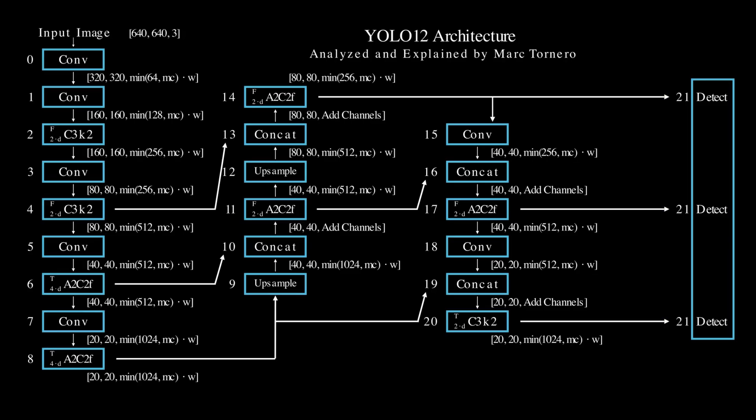The architecture you see here is shared across all YOLO12 model sizes, whether you're using the nano, small, medium, large, or extra-large models. However, you may have noticed that the specific tensor shapes follow a formula with the exact shape depending on the values for MC and W for each model size.